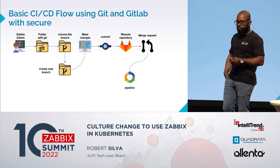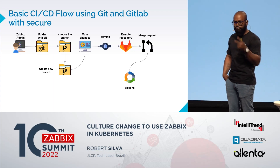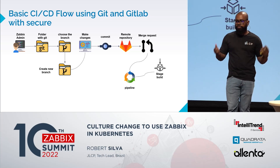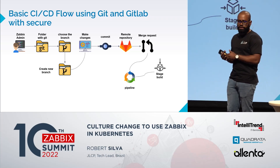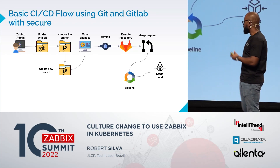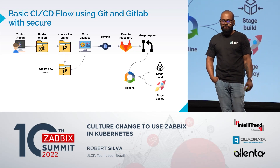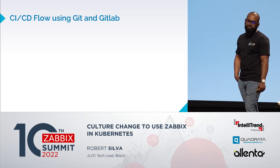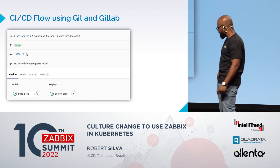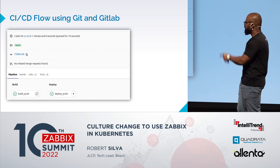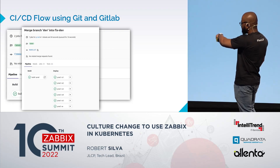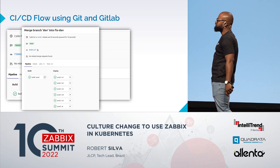When the merge request is approved, the pipeline process starts. The pipeline has two stages: the first is a build stage for custom Docker images — for example, official Zabbix Docker images may not be complete; if you need to monitor a specific database, the Zabbix proxy image may not have the required drivers installed, so you add them. The second stage deploys your environment. In a simple example, two jobs run in just one minute. In another example, seven jobs run in just one minute.